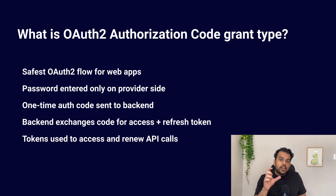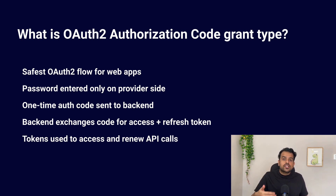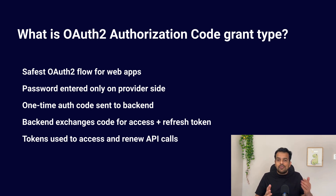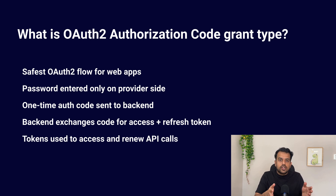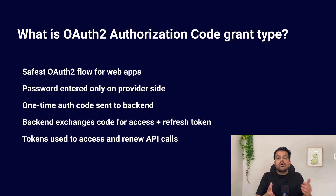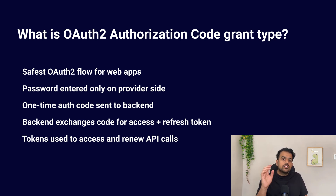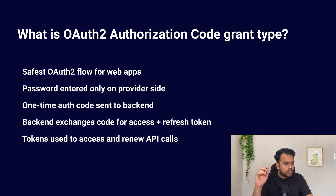The access token is used to call protected APIs, and the refresh token is used to get a new access token when the old one expires. The simple flow is: you log in on the browser, get the authorization code, the backend gets the token, and then you are able to access the API.